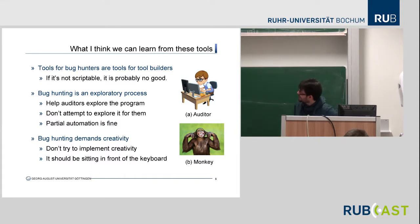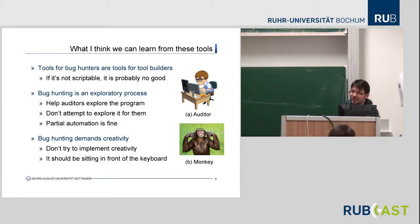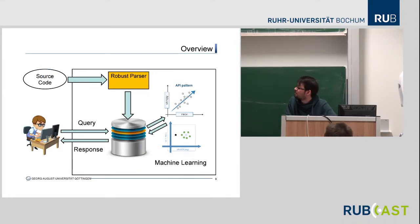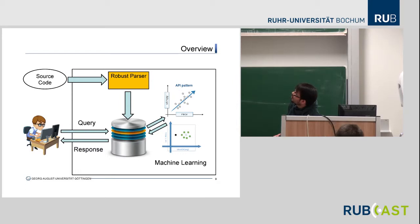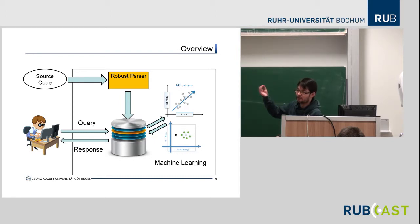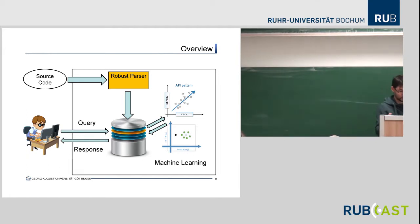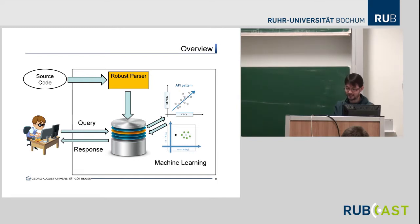Here's the overview of the system I'm presenting today. You can see there's a central component — the robust parser — which first gets the code. We're going to look at why this needs to be robust. The parser stores some representation of the code in a database, and we want the auditor to be able to ask questions about this code and get responses. In the back we have some machine learning magic — things like give me similar code, give me odd code. That's the machinery.